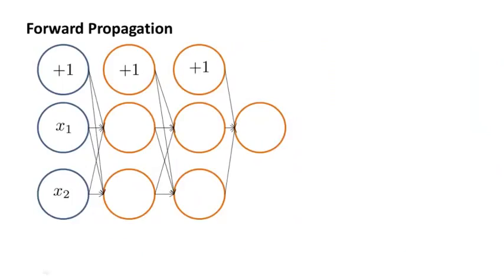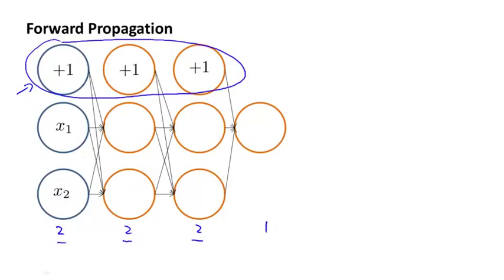In order to better understand backpropagation, let's take another closer look at what forward propagation is doing. Here's a neural network with two input units — not counting the bias unit — two hidden units in this layer, two hidden units in the next layer, and finally one output unit. Again, these counts of two, two, two are not counting the bias units on top.